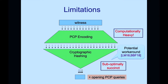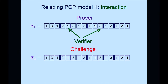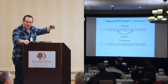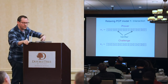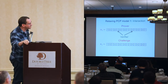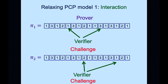The first type of relaxation to address computational cost is allowing interaction: the prover can send multiple PCPs, each determined by public coins or challenges issued by the verifier. We can use Fiat-Shamir to make this non-interactive. This type of relaxation helps make prover work smaller — addressing the computationally heavy prover problem — but the succinctness problem remains. This was introduced in interactive PCP by Kalai and Raz, and later as IOPs by Ben-Sasson, Chiesa, Spooner, and Rothblum.